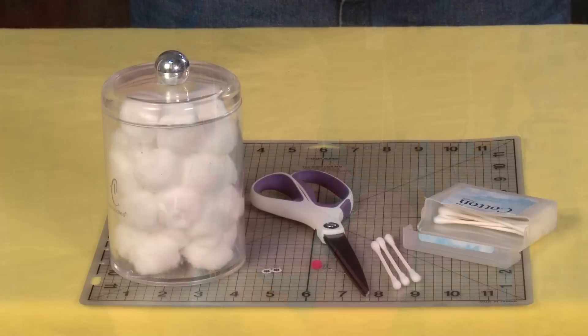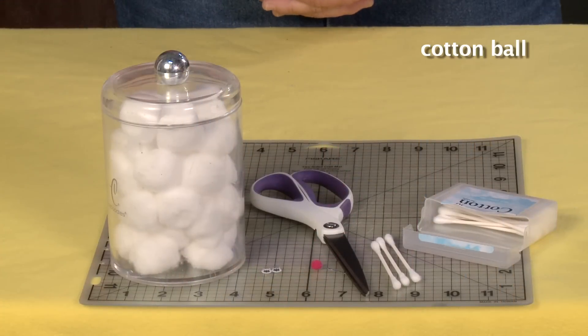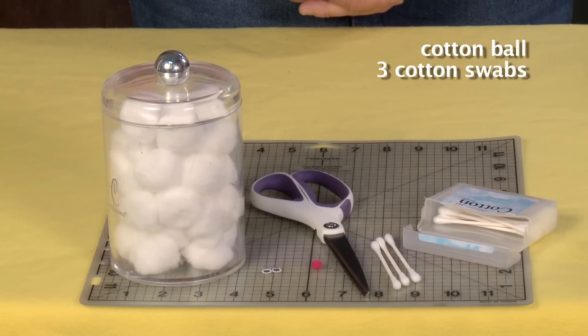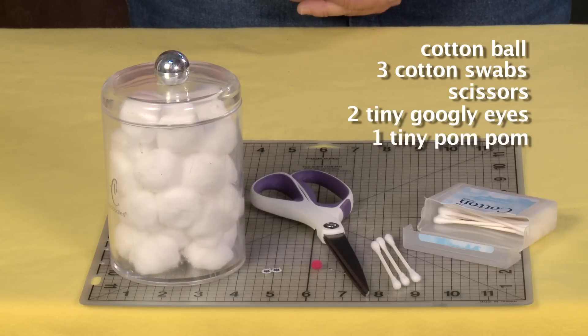But I'm going to teach you guys how to make it right now. For this project you'll need one cotton ball, three cotton swabs, scissors, two tiny eyes, one tiny pom-pom, and a hot glue gun.